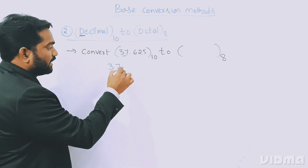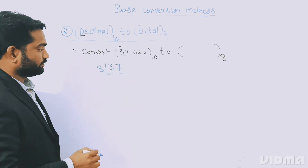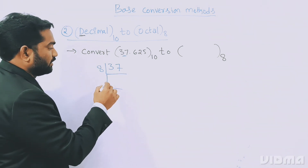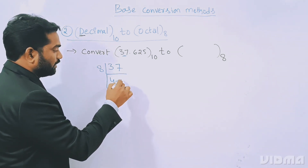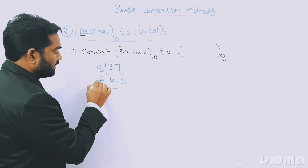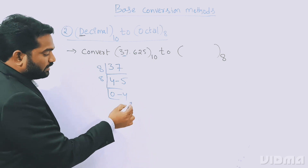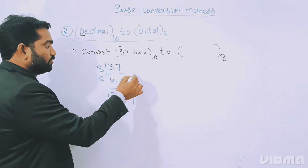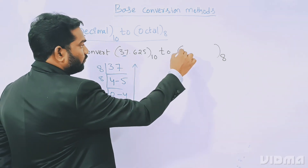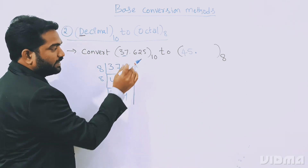Now, 37 divided by 8: 8 goes into 37 four times, giving 32, and the remainder is 5. Then 4 divided by 8 gives 0 with remainder 4. Writing the answer from bottom to top, the integer part is 4 5.